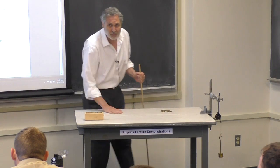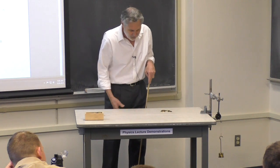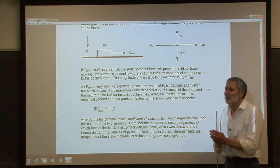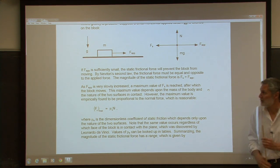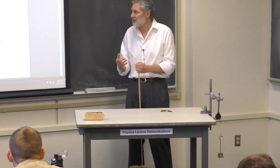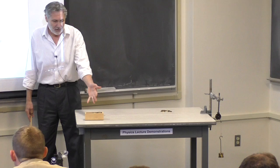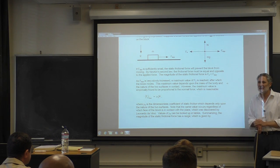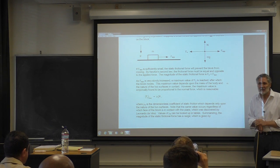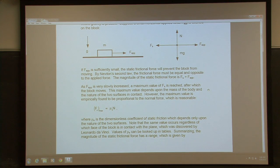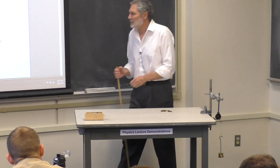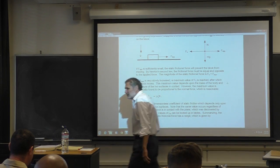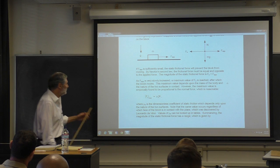The coefficient of static friction depends upon the nature of the surfaces. Obviously, if this were sandpaper instead of whatever this material is, the coefficient would be greater. It depends upon both surfaces in contact. We would like a theory that allows us to calculate this from surface properties, but I don't know if anyone has been fully successful. If you're interested, you can look it up on Wikipedia — it's usually right. That's one of the goals of physics: we should be able to calculate this.